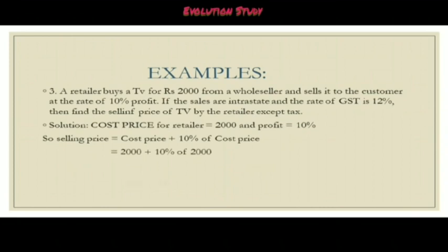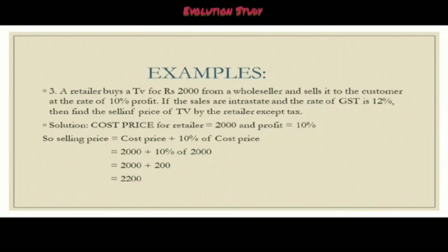Another example says a retailer buys a TV for rupees 2000 from a wholesaler and sells it to the customer at the rate of 10 percent profit. If the sales are intrastate and the rate of GST is 12 percent, find the selling price of the TV by the retailer excluding the tax. The solution: cost price for the retailer is 2000 and profit is 10 percent. So the selling price equals cost price plus 10 percent of cost price, which means 2000 plus 200, giving an answer of rupees 2200.